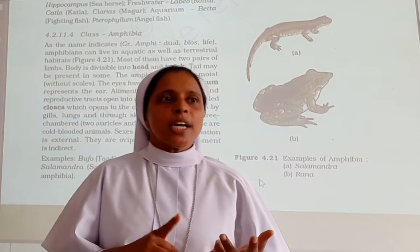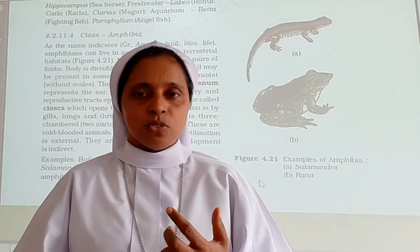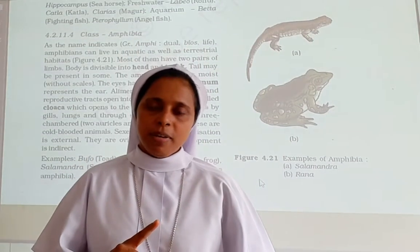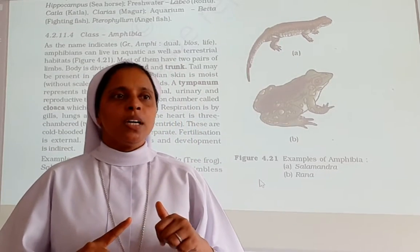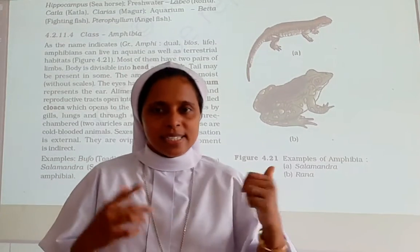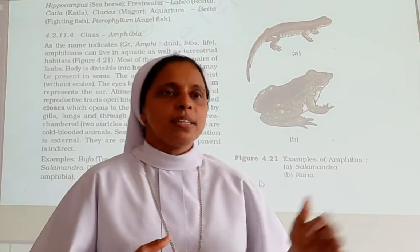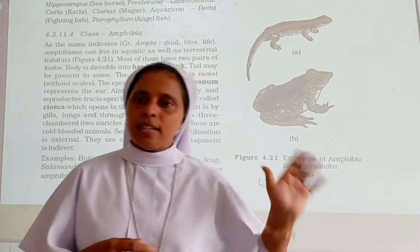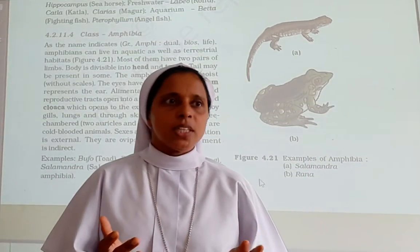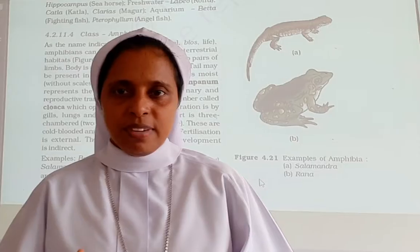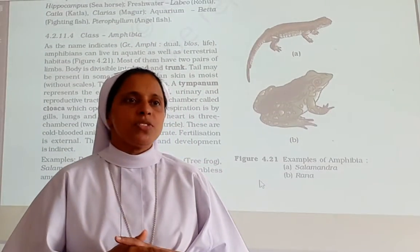Respiration is mainly by gills and lungs. Those in water respire by gills, while those on land respire through lungs and also through the skin — skin respiration also takes place in amphibians. The heart is three-chambered, with two auricles and one ventricle.